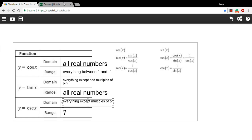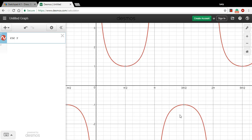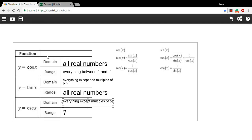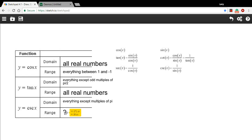And the range is, again, going to go from 1 up and from negative 1 down. So it's going to be everything except what's between 1 and negative 1.